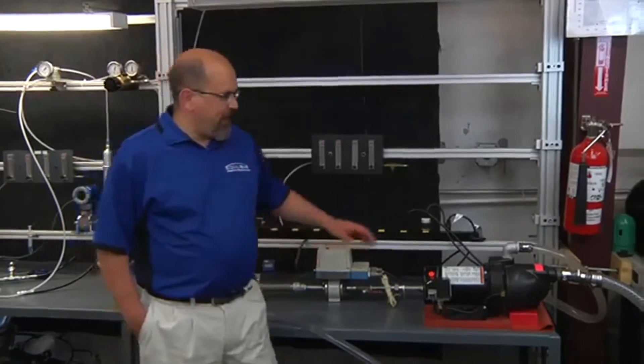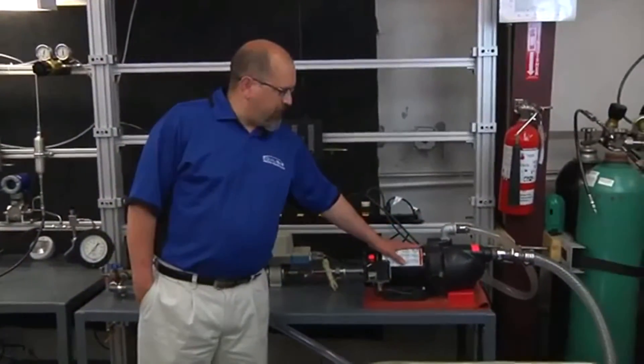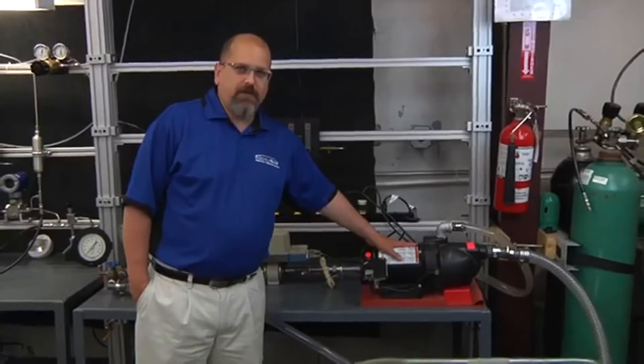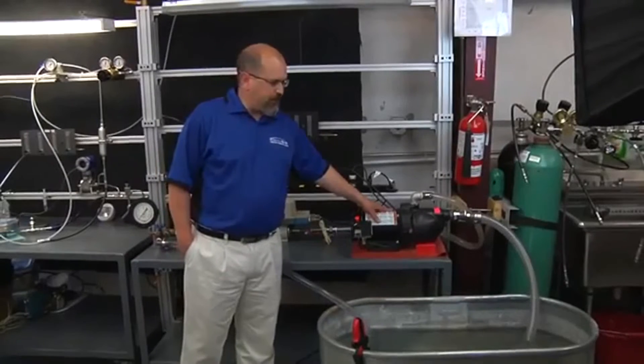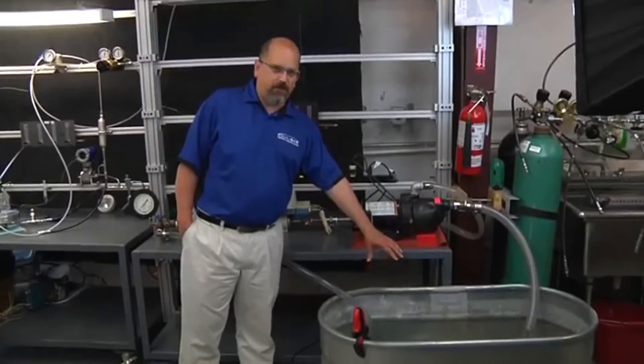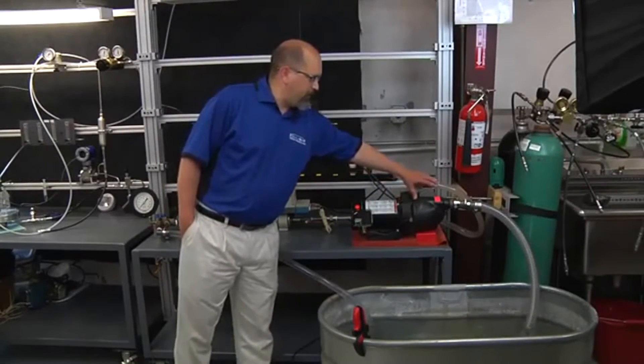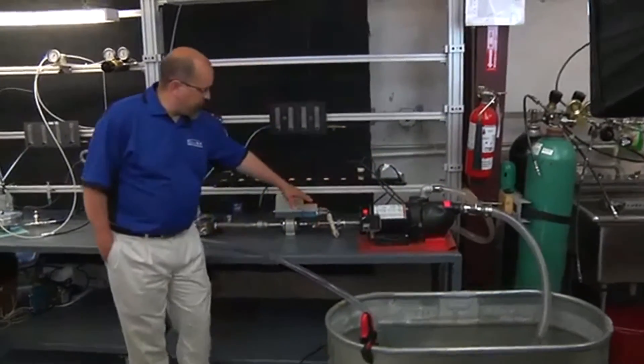We're back out in the Equilibar Engineering Lab. This is our non-positive displacement pump. It's a rotary impeller centrifugal type pump. It's going to be drawing fluid from this reservoir and pump the fluid at pressure through our system.